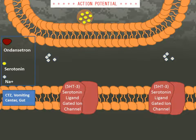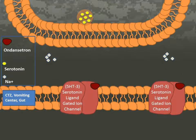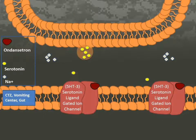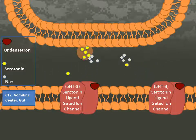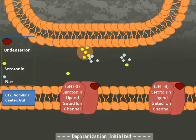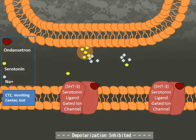Ondansetron is believed to block the 5-HT3 receptor from binding with serotonin. This inhibits the sodium influx that would lead to depolarization of the afferent sensory nerve that stimulates the chemoreceptor trigger zone.